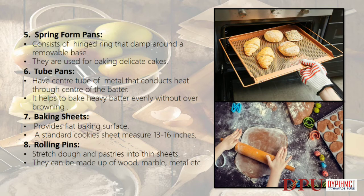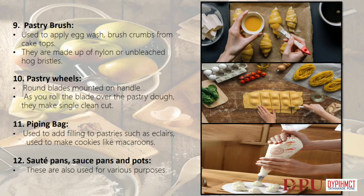Rolling pins: stretch dough and pastries into thin sheets; can be made of wood, marble, metal, etc. Pastry brush: used to apply a glaze and brush crumbs from cake tops; made of nylon or unbleached hog bristles. Pastry wheels: round blades mounted on a handle; as you roll the blade over pastry dough, they make a single clean cut. Piping bag: used to add filling to pastries such as éclairs and to make cookies like macaroons. Sauté pans, saucepans and pots are also used for various purposes.